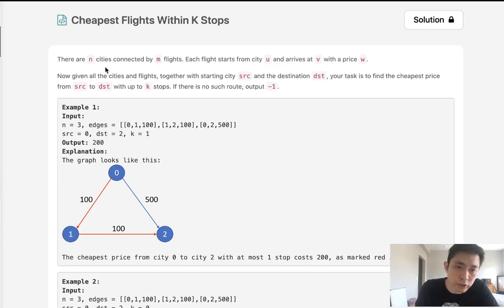Welcome to June's legal challenge. Today's problem is cheapest flights within K-stops. There are N cities connected by M flights. Each flight starts from city U and arrives at V with a price W. Given all cities and flights, starting city source and destination city destination, your task is to find the cheapest price from source to destination with up to K-stops.